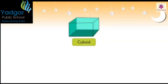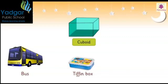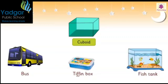This is a cuboid. A bus, a tiffin box, and a fish tank are all examples of a cuboid.